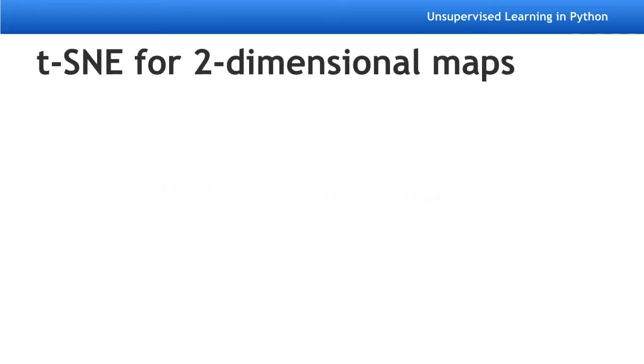In this video, you'll learn about an unsupervised learning method for visualization called t-SNE. t-SNE stands for T-Distributed Stochastic Neighbour Embedding. It has a complicated name, but it serves a very simple purpose.